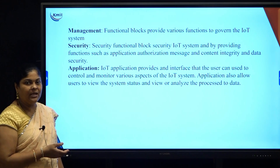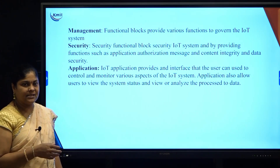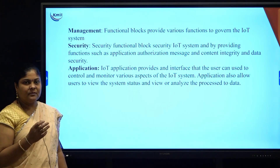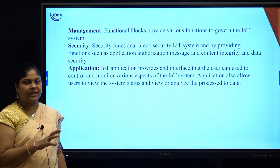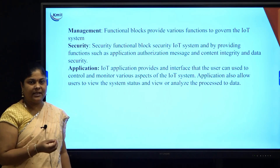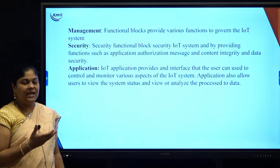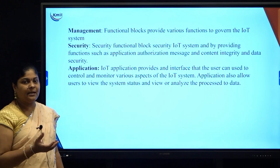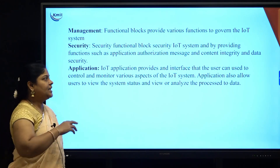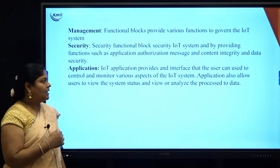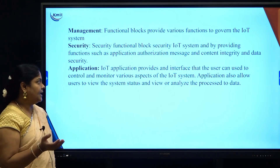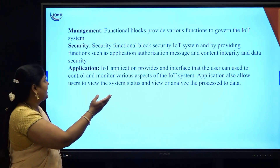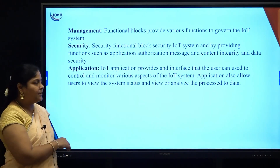Next is security. When we are talking about IoT, sensors are connected in the IoT system, and every sensor is sending data to another sensor through the internet, meaning every data is available on the internet. Once the data is on the internet, there can be many different types of threats like viruses, hackers, or data loss. That is why security is provided — with authorization mechanisms, content integrity, and data security — for data flowing through the internet.